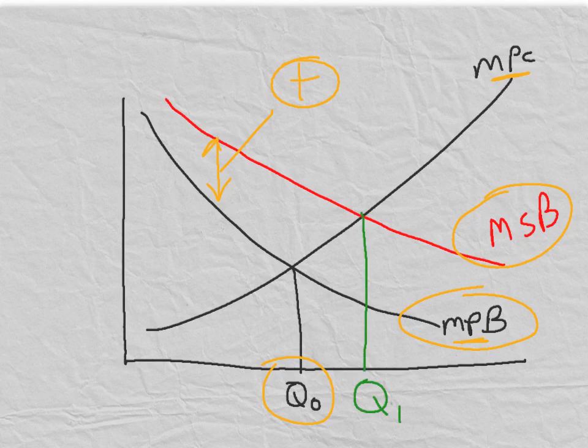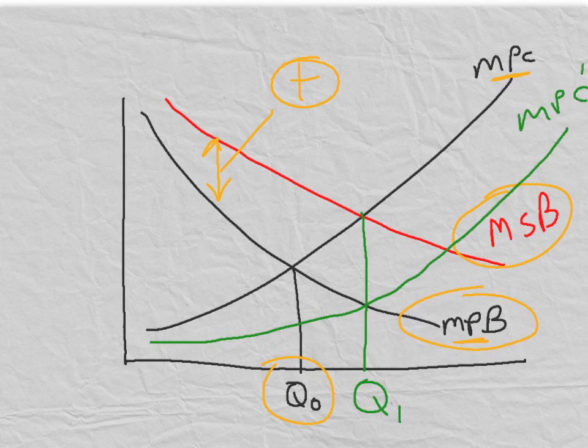How do we achieve this? We do so in the opposite way to what we did with negative externalities. Here, we want to reduce the marginal private cost to make it lower. If we succeed in making the marginal private cost lower, it will reach an equilibrium with the marginal private benefit at Q1.